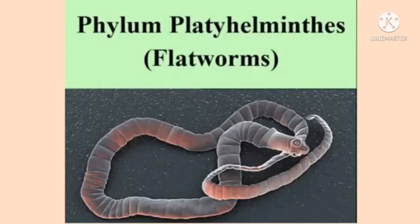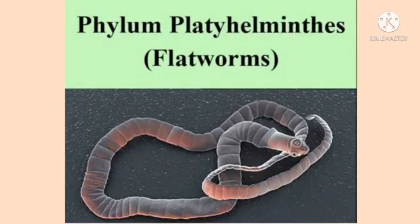Third one is phylum Platyhelminthes — flatworms. They are bilaterally symmetrical. What do you mean by bilaterally symmetrical? The body parts are arranged along a central axis, and if the animal is cut through the central axis, we get two identical halves. They are acoelomate and triploblastic. Triploblastic means three layers. Acoelomate means they do not have a body cavity — coelom means body cavity.